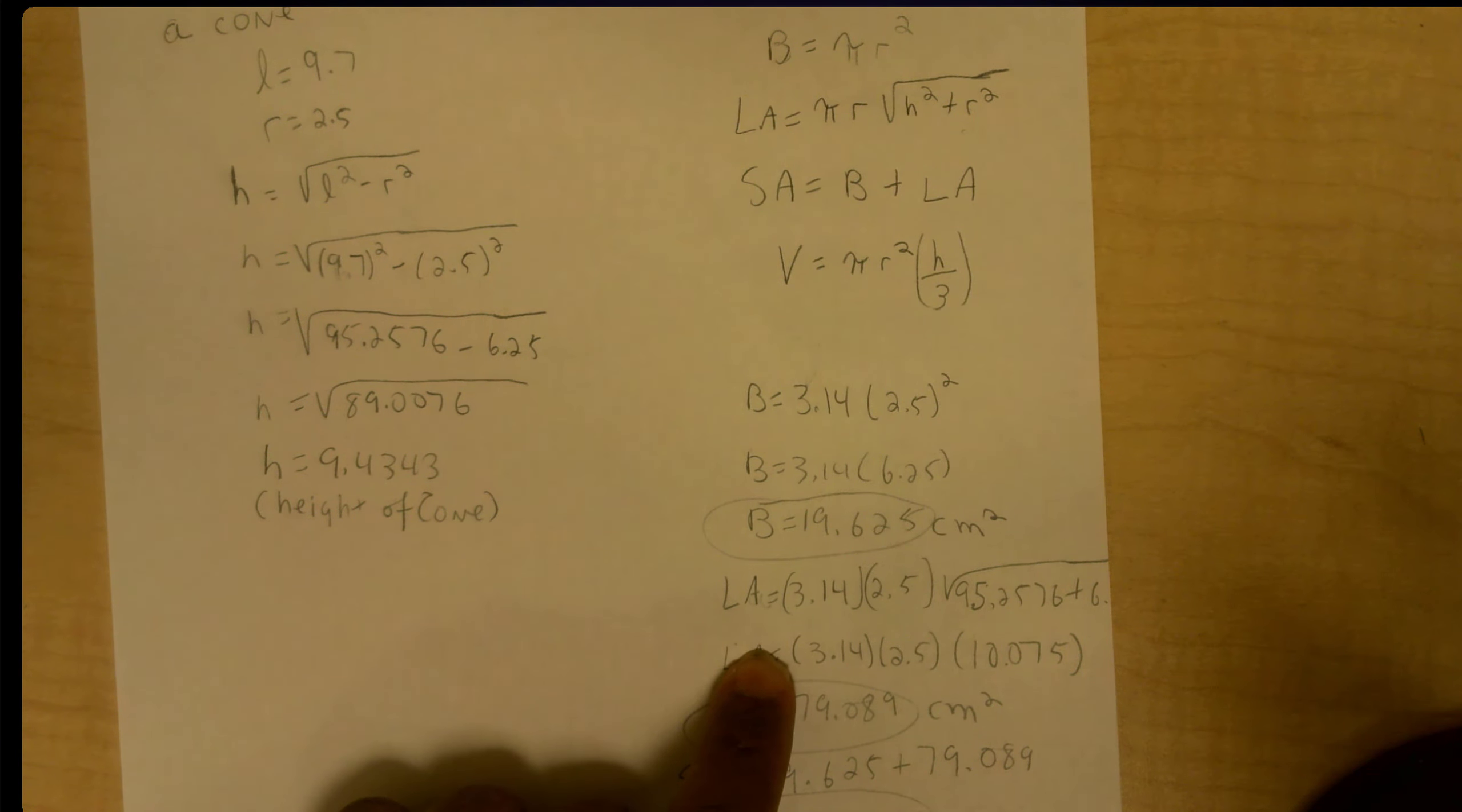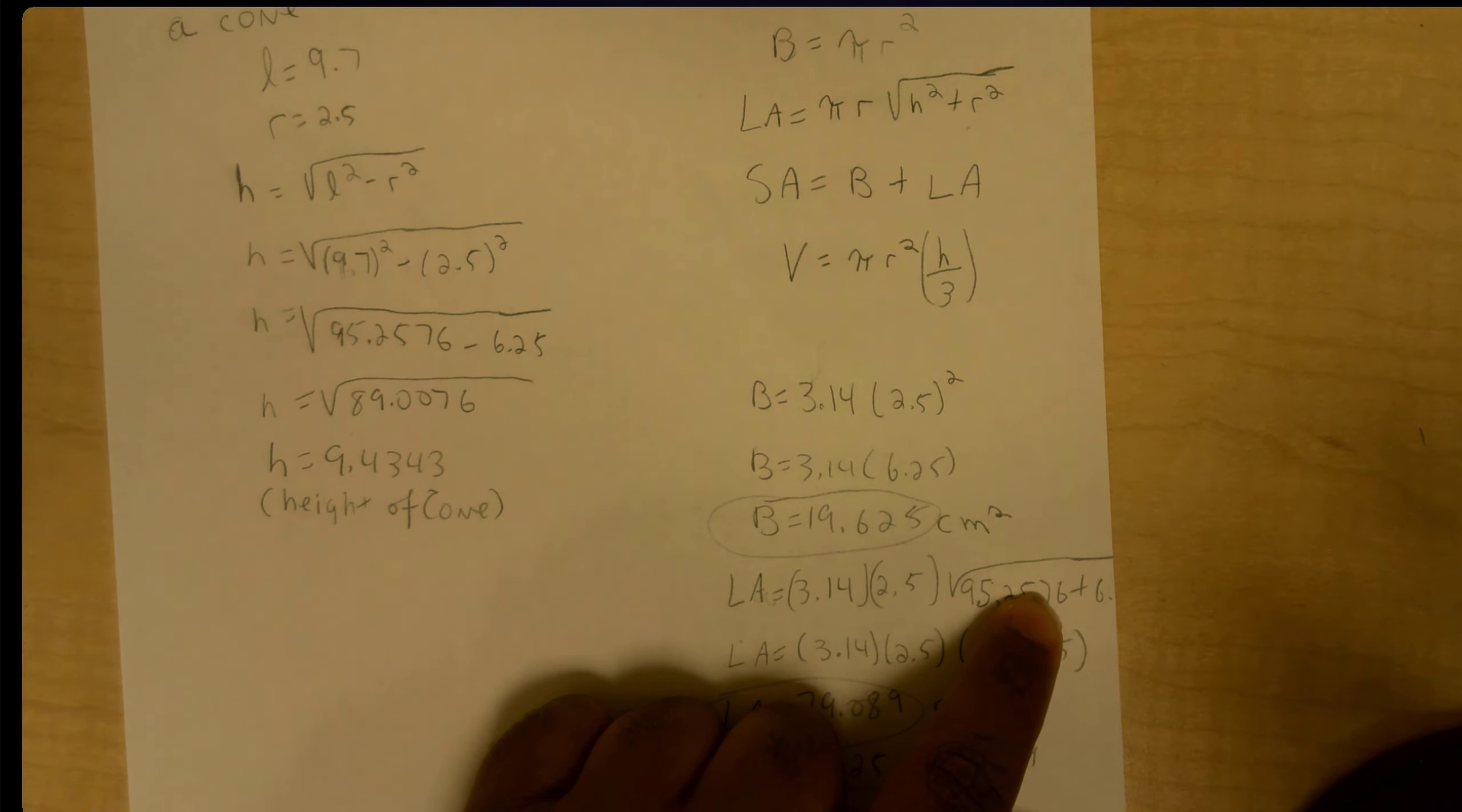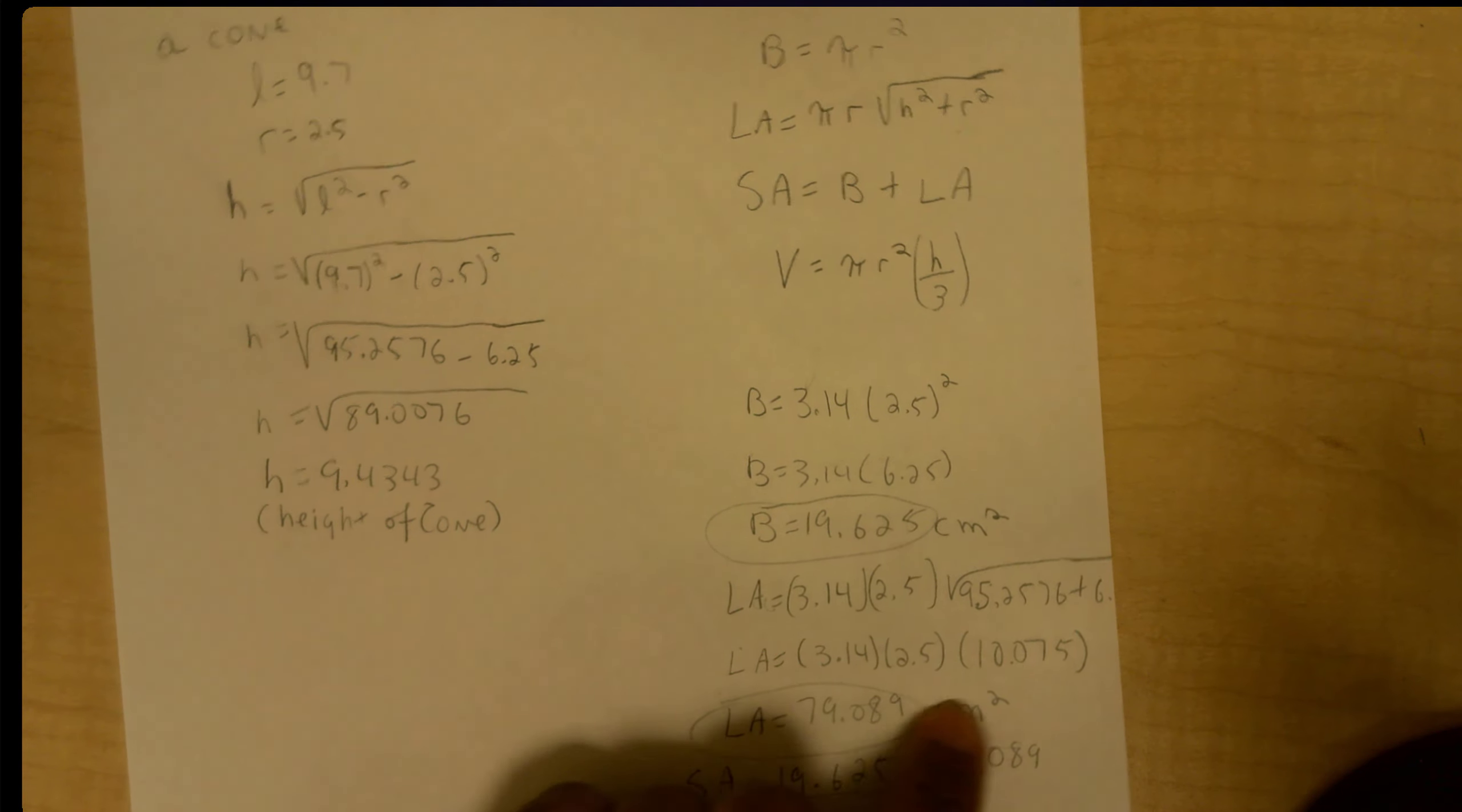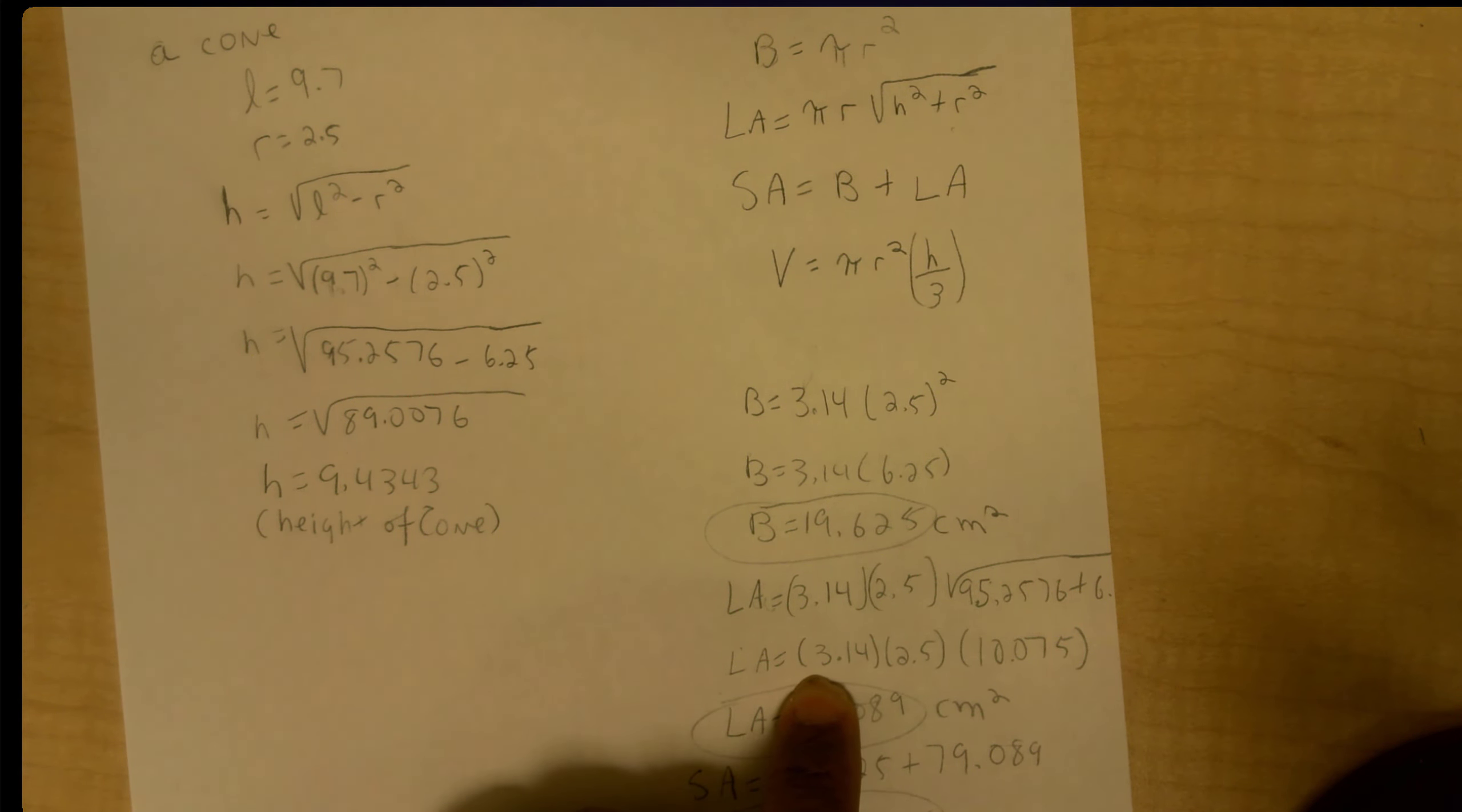Then I found my lateral area which is Pi r squared times the square root of h squared plus r squared. And then I went ahead and simplified what's inside the radical here and multiplied the cross, and I end up with 79.089 square centimeters.